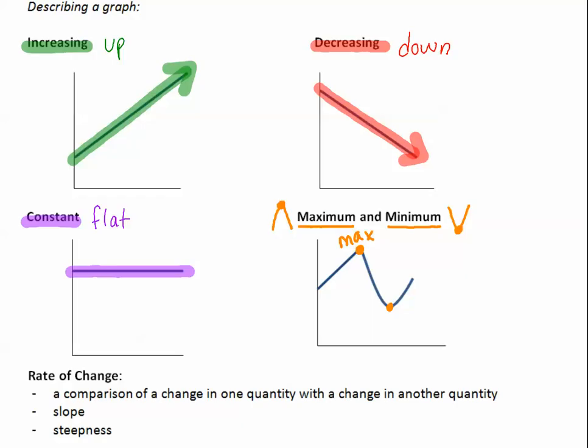Rate of change, we're going to talk more about later on. It's a comparison of a change in one quantity with a change in another quantity. It can be described as slope and steepness. Like when we say a graph is increasing, it could increase at a different steepness. This is steep, and then we could draw a graph that is also increasing but is not very steep. So this is steep, and this is not as steep, for example.